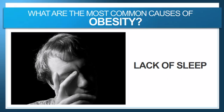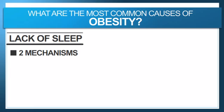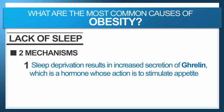A third cause of obesity, which may come as a surprise to many of you, is lack of sleep. Yes, lack of sleep is actually a cause of obesity. There are two different mechanisms going on here. One is the fact that sleep deprivation — really less than seven to eight hours of sleep a night — actually results in an increased secretion of a hormone called ghrelin, spelled G-H-R-E-L-I-N. This is a hormone which actually causes an increase in your appetite. It's an appetite stimulant, which if you're trying to lose weight, you certainly don't want. So you can combat that by getting adequate sleep, because if you don't, this hormone gets produced and your appetite increases.